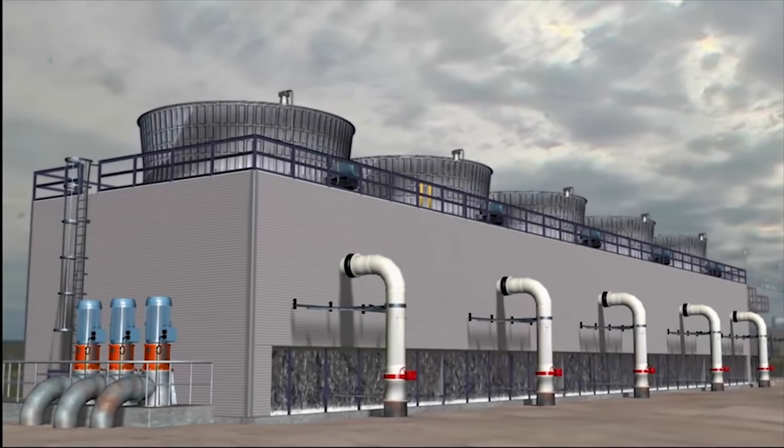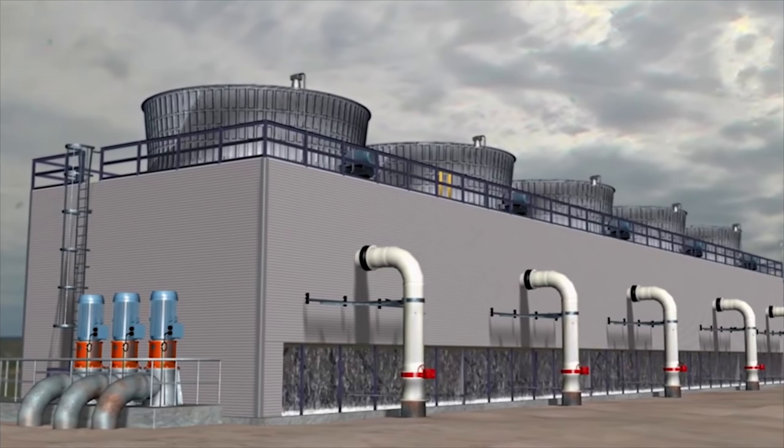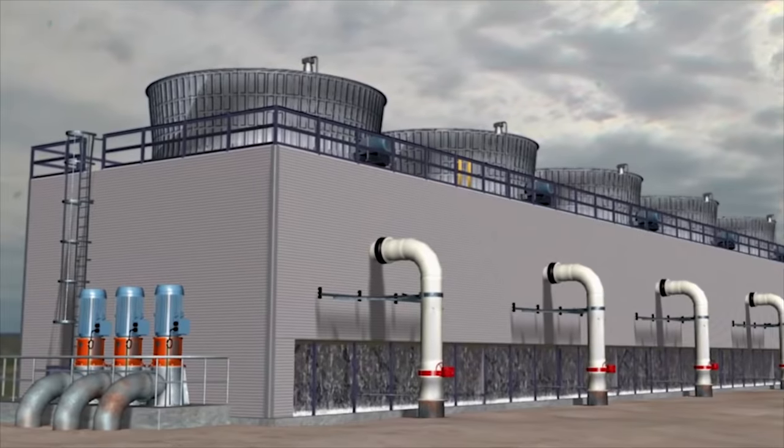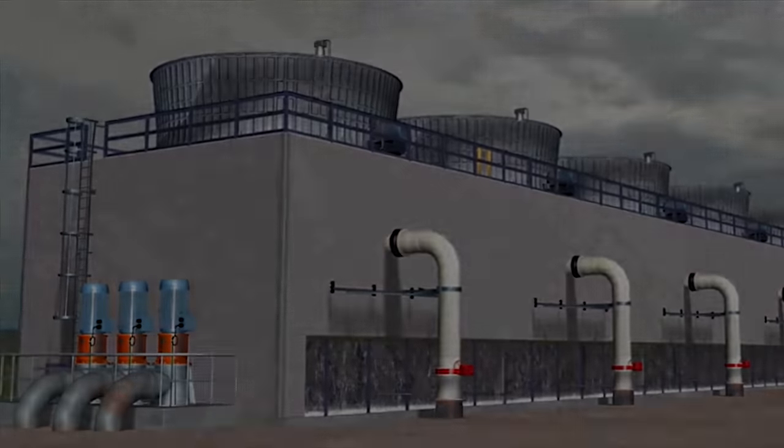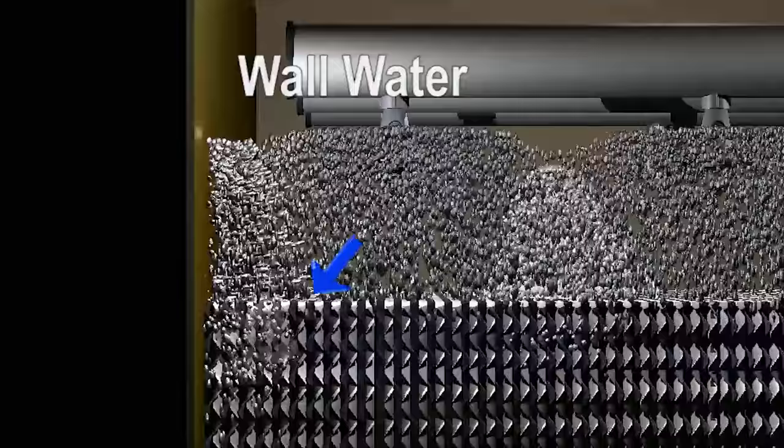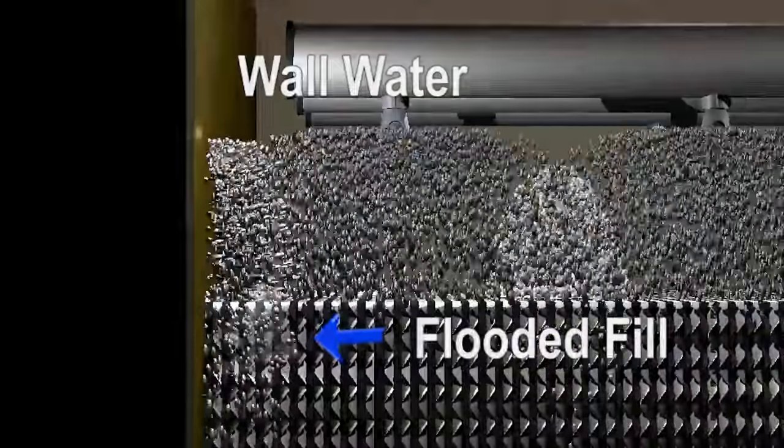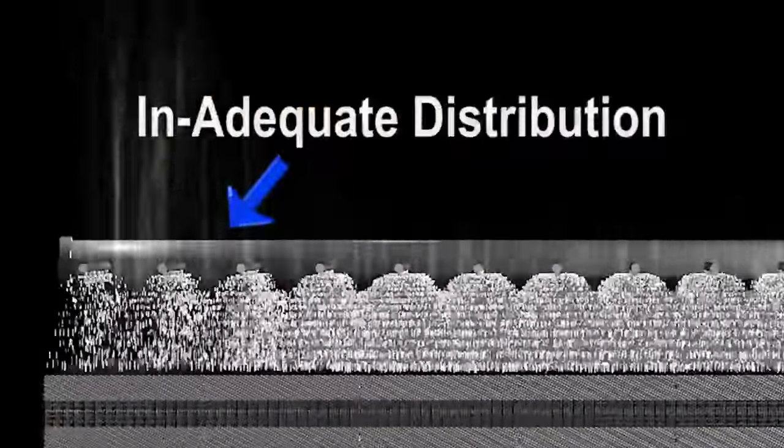Almost all of today's counterflow cooling towers have the same three problems that significantly downgrade their performance. Uneven water loading as a result of overlapping circular nozzles. Excessive wall water as a result of using circular nozzles and inadequate water distribution systems.